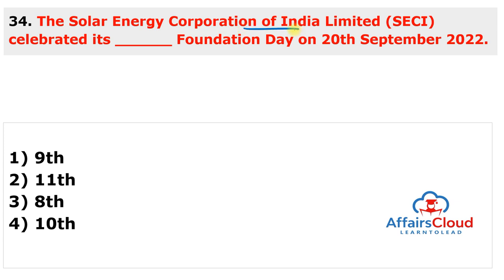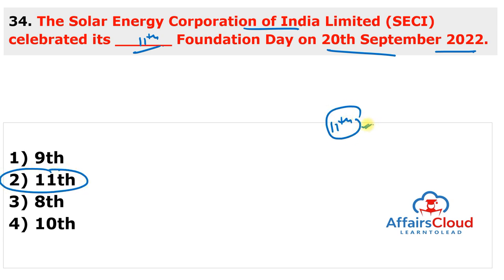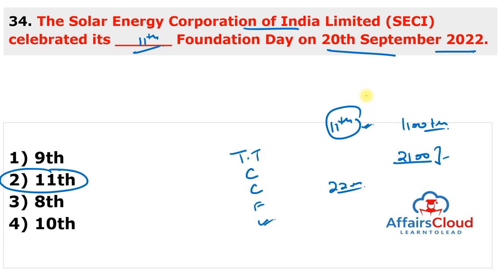The Solar Energy Corporation of India Limited (SECI) celebrated its 11th Foundation Day on 20th September 2022. Events included plantation of 1,100 trees, blood donation camps, distribution of 2,100 food packets, guest lectures for around 2,200 school kids, and indoor sports tournaments including table tennis, chess, carrom, football, and team building activities. SECI is a central public sector unit under the Ministry of New and Renewable Energy, established on 20th September 2011 to facilitate implementation of the National Solar Mission.